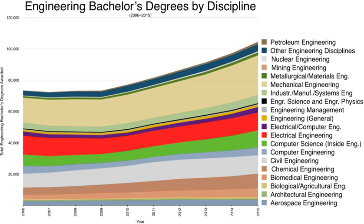In Slovakia, an engineer is considered to be a person holding a master's degree in technical sciences or economics. Several technical and economic universities offer four- to five-year master study in fields such as chemistry, agriculture, material technology, computer science, electrical and mechanical engineering, nuclear physics and technology, or economics. A bachelor's degree in a similar field is a prerequisite. Graduates are awarded with the 'ing.' title placed in front of one's name. Doctoral study is offered by universities and some institutes of the Slovak Academy of Sciences.